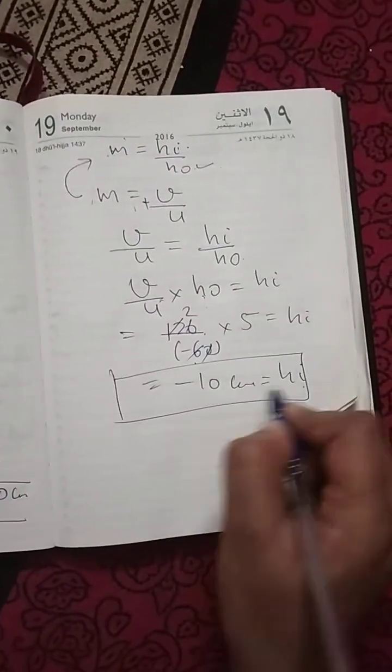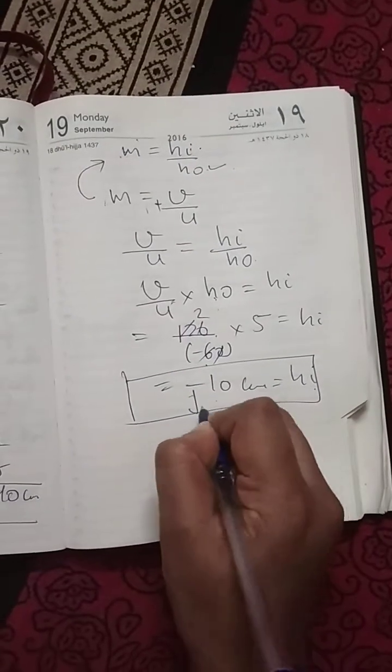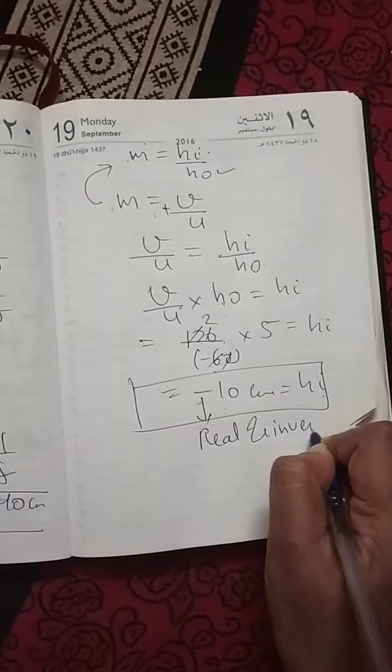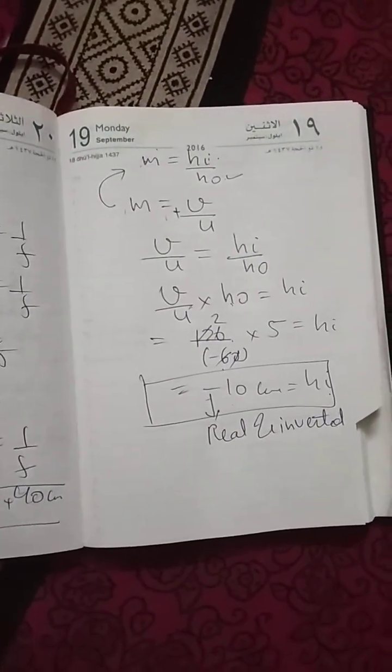So height of image equals minus 10 cm. Minus means real and inverted. Thank you so much for watching. Do like, subscribe, and share.